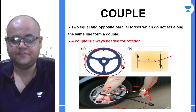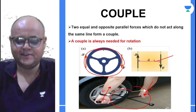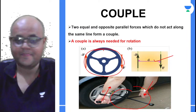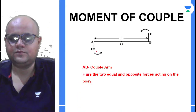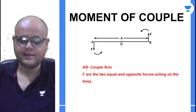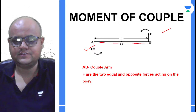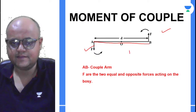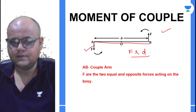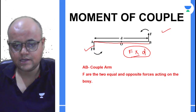Apologies for the light fluctuation — there are power cuts. The moment of couple: we have two forces, and the perpendicular distance between the line of action of these forces is the couple arm. The moment of couple equals any one force multiplied by the couple arm. This distance AB is called your couple arm.